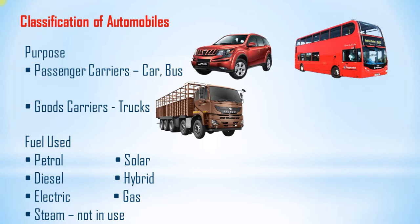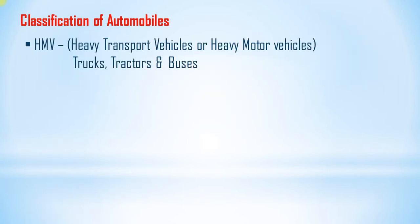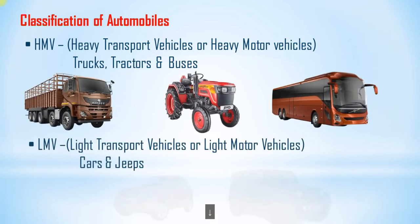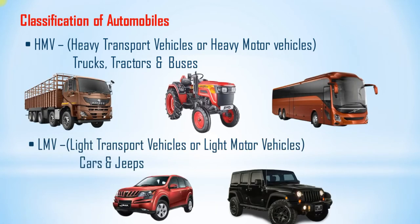In hybrid, we can further classify as semi-hybrid, fully hybrid, and micro-hybrid. Other fuel types include electric vehicles, gas-operated vehicles, and steam — though nowadays steam engines are no longer used. For classification by weight: HTV means Heavy Transport Vehicle or Heavy Motor Vehicles, with examples like trucks, tractors, and buses. LTV means Light Transport Vehicle or Light Motor Vehicles, with examples like cars and jeeps.